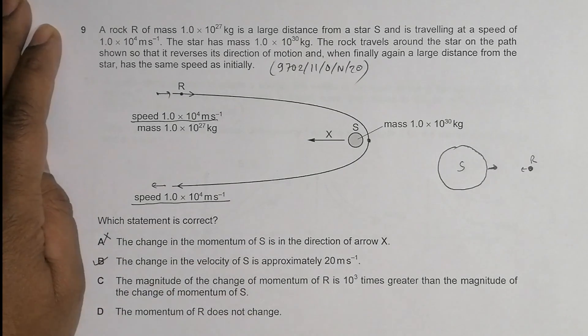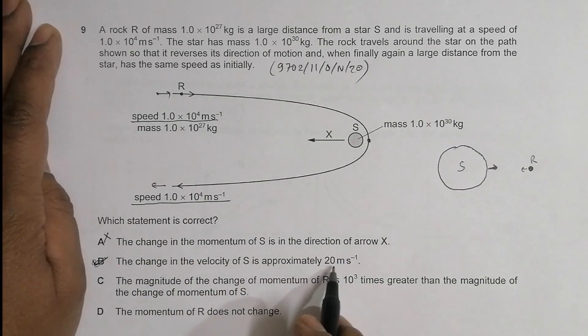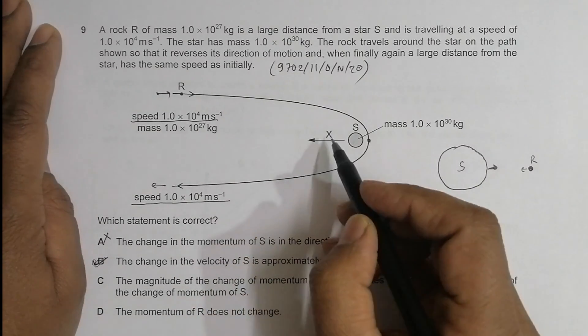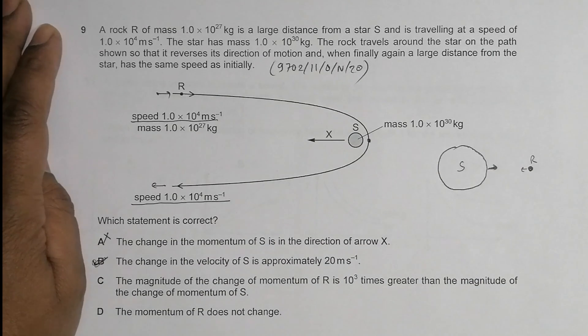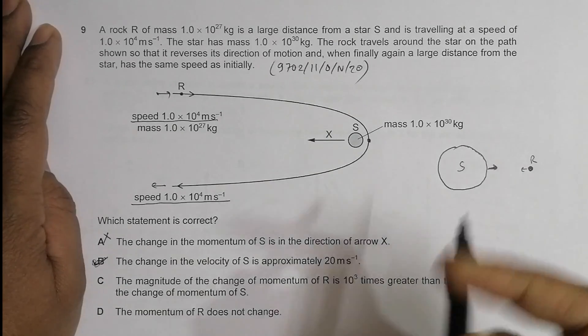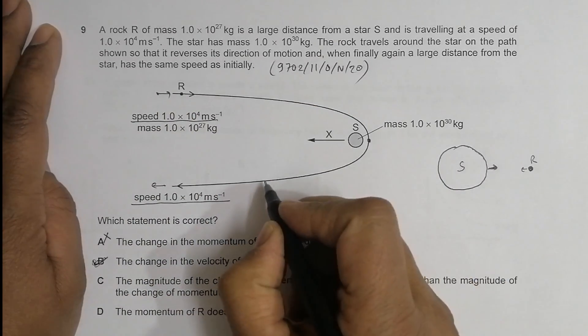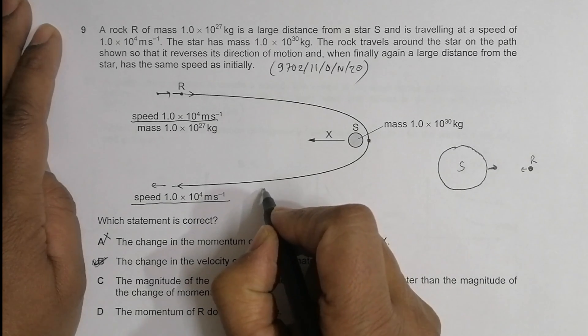Option B says the change in velocity of S is approximately 20 meters per second. We have to calculate that. During collision, the change in momentum of both bodies should be equal in magnitude.